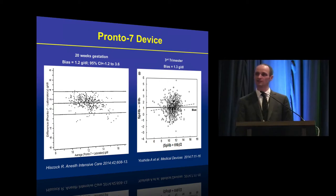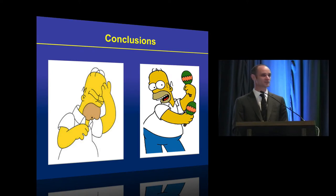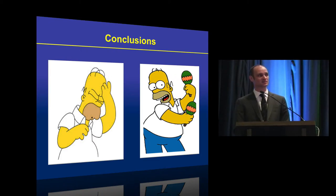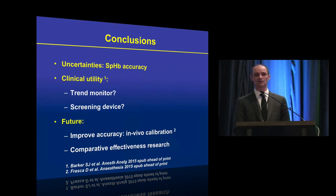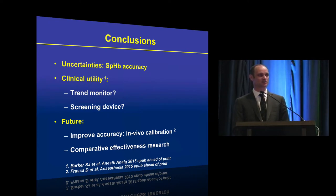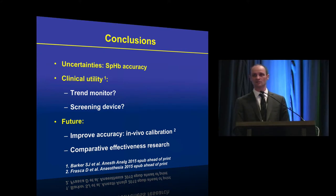Overall, the jury is officially out. This technology isn't really ready to replace lab testing for assessing hemoglobin concentration. But these devices may be better used as trend monitors — assessing change over time — or as screening devices. If a device records a hemoglobin of around eight grams per deciliter in a patient you didn't suspect of being anemic, that may prompt you to perform a lab test. The future is promising — software improvements continue, in vivo calibration per patient has been suggested. But ultimately, we need more comparative effectiveness research showing whether maternal outcomes are improved with these devices compared to standard of care.